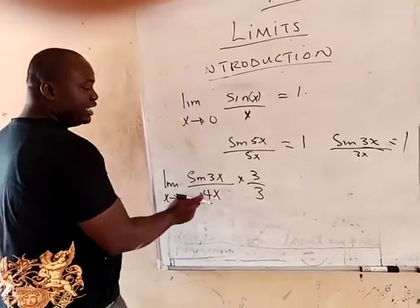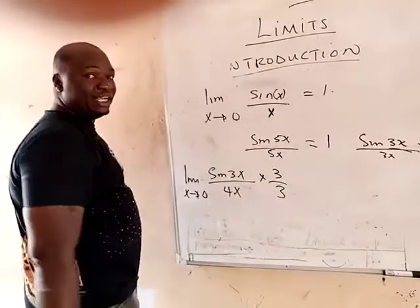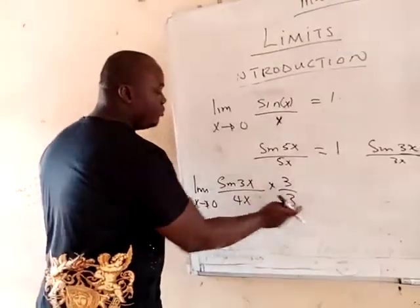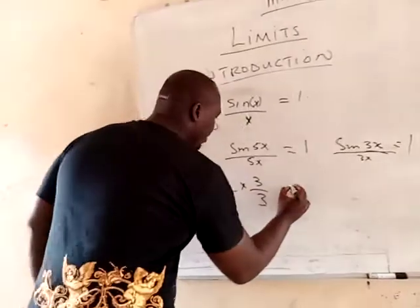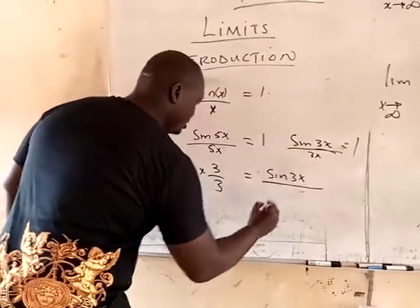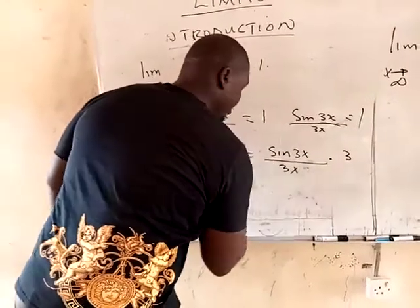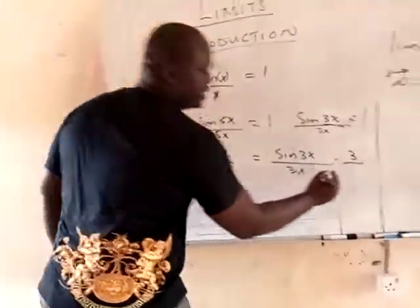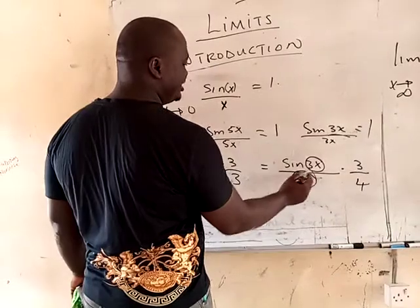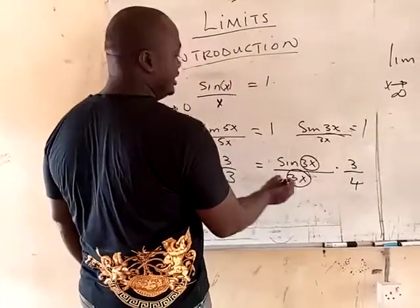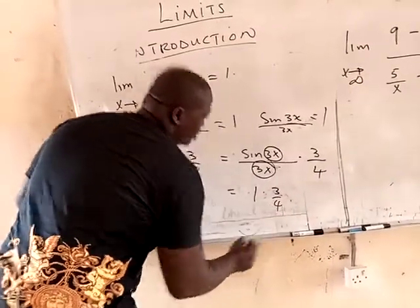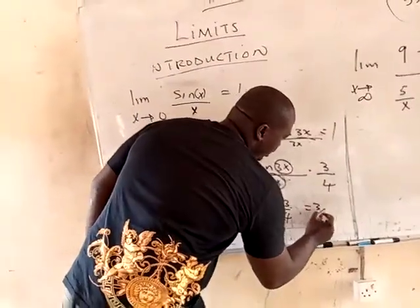So 3 times 4x gives you 12x in the denominator. I'm not going to multiply them together — I'm going to interchange them. I'll bring the 3x inside to match sine 3x, giving me sine 3x over 3x, times 3 divided by 4. Since sine 3x over 3x equals 1, you have 1 times 3 over 4, which gives you 3 over 4 as the final answer.